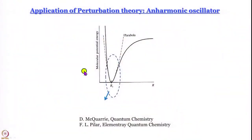We have learned earlier in this course that one can talk about vibration of diatomic molecules and model them using the simple harmonic oscillator model. We know that we can solve the Schrödinger equation exactly for this kind of system — simple harmonic oscillator — and we know what the solutions are. We are going to revise them once again today.